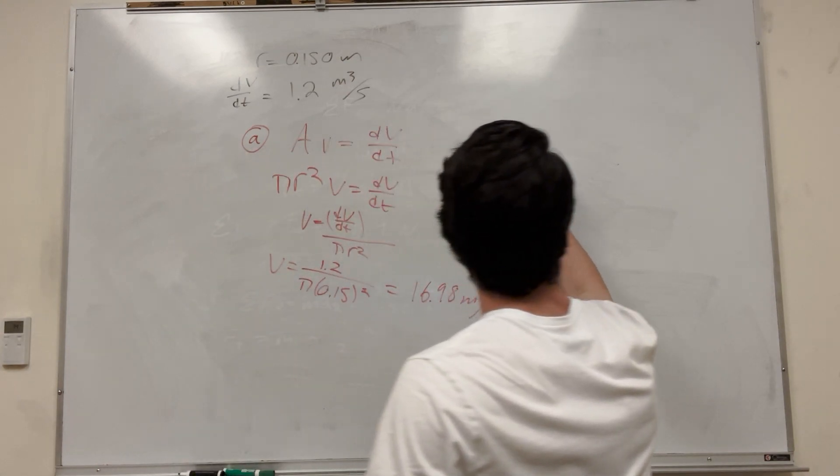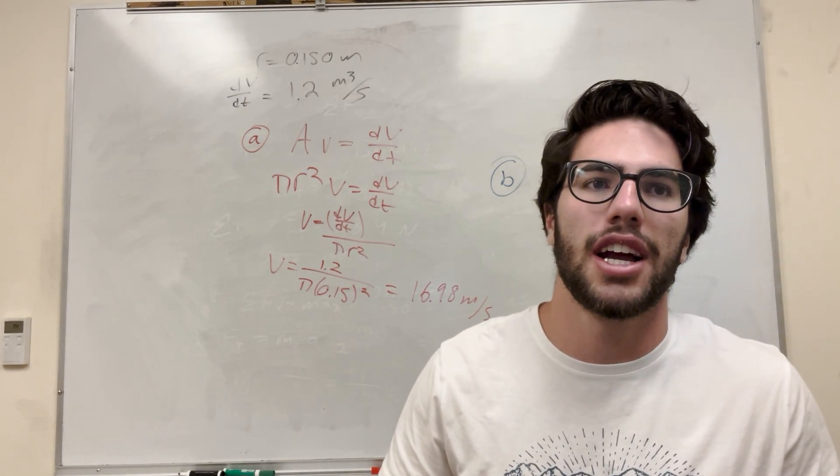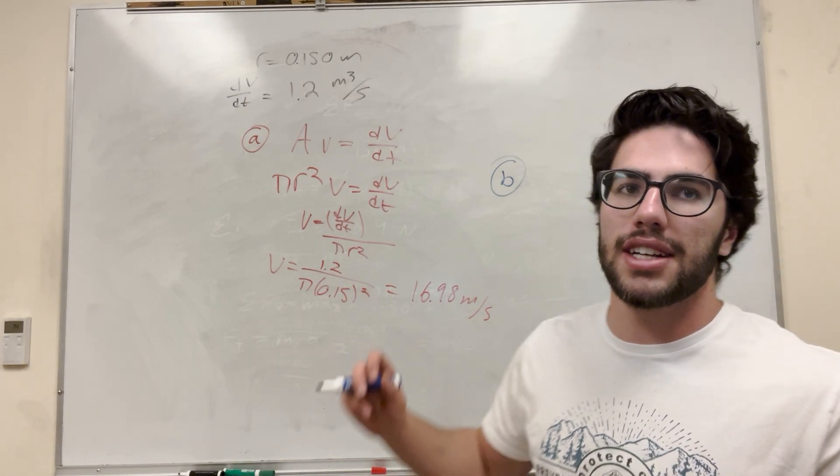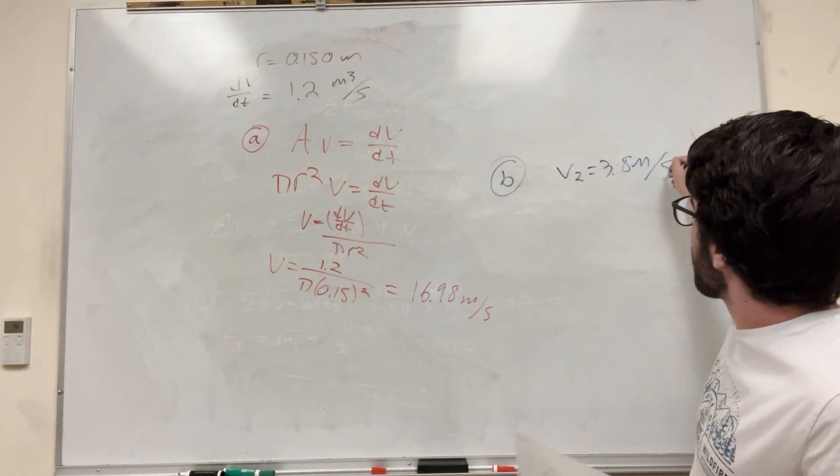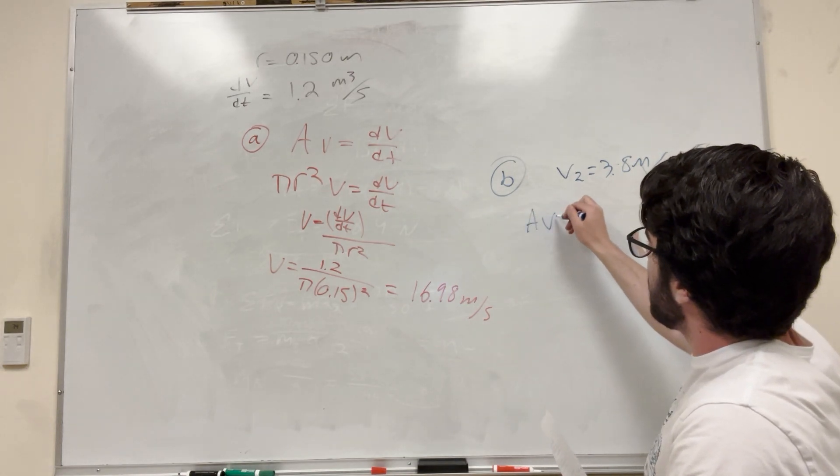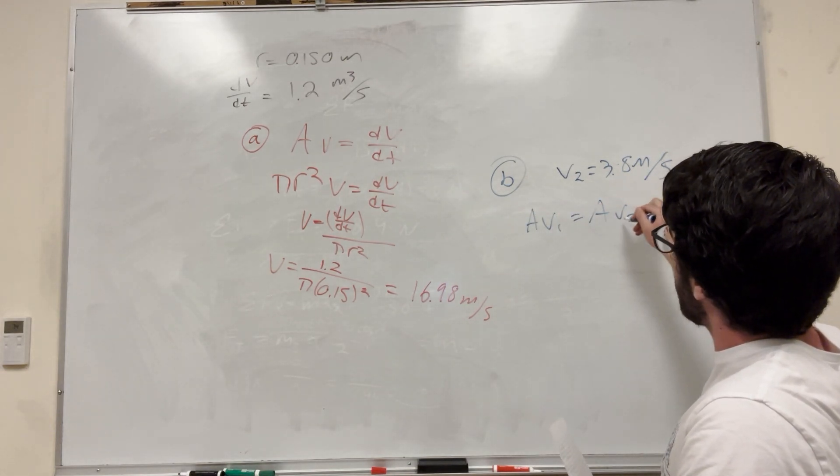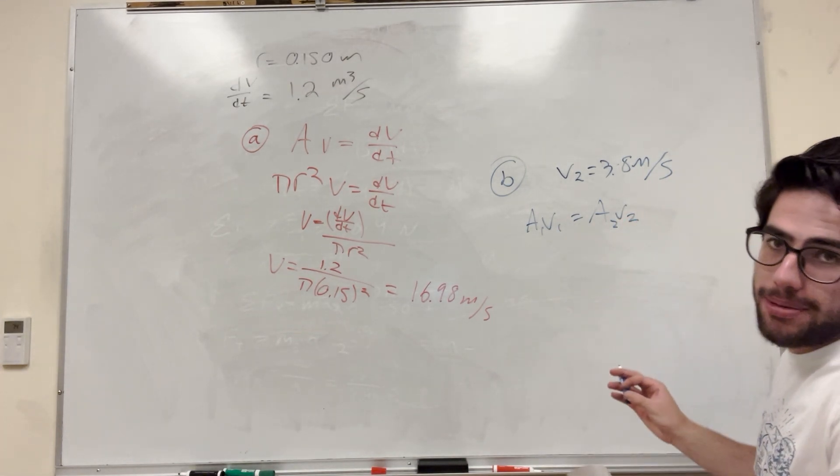Let's move on to part B. It says at another section, the speed is 3.8 meters per second. We're going to rearrange this equation. A₁v₁ equals A₂v₂. Area times velocity at any point equals the area times velocity at any other point.